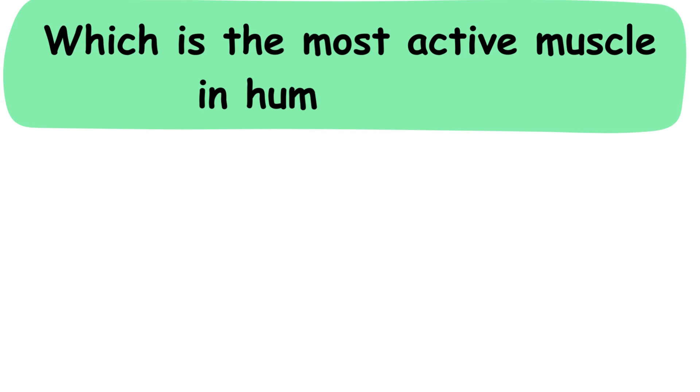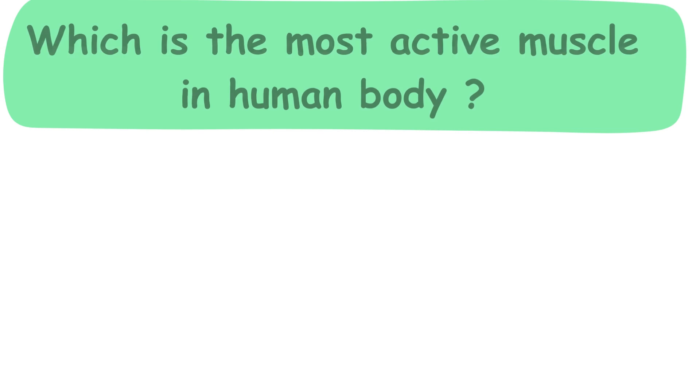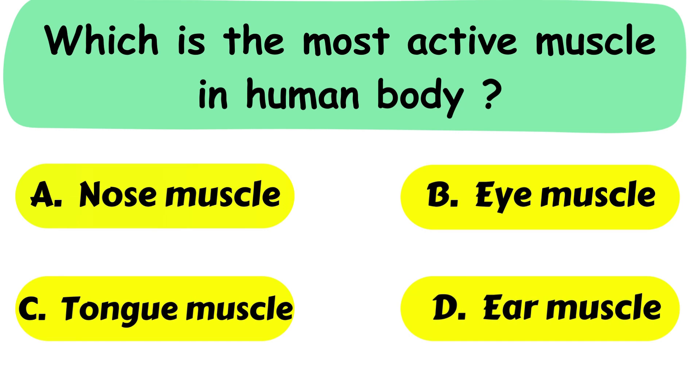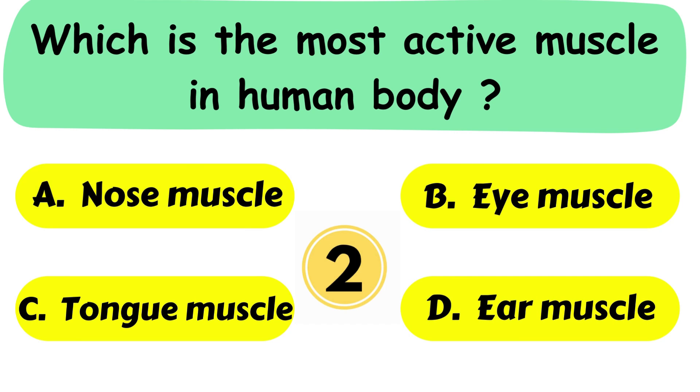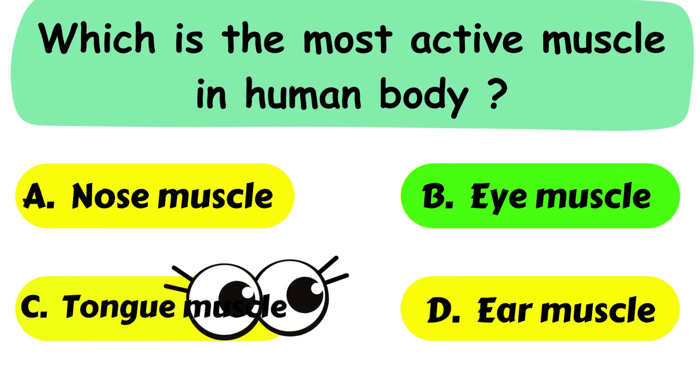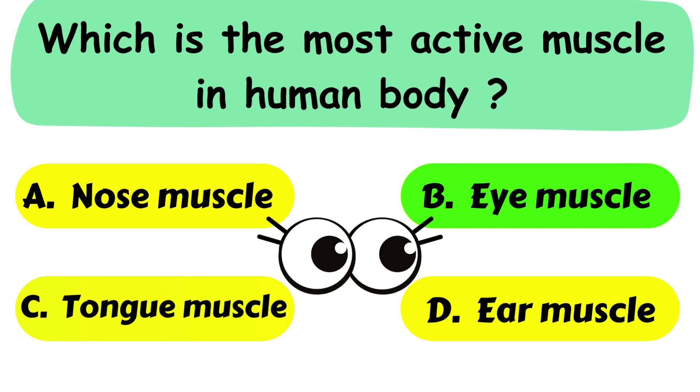Question No. 14. Which is the most active muscle in human body? A. Nose muscle. B. Eye muscle. C. Tongue muscle. Or D. Ear muscle. Correct answer is option B. Eye muscle.